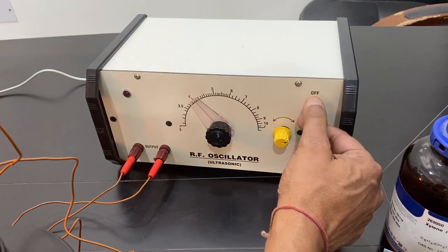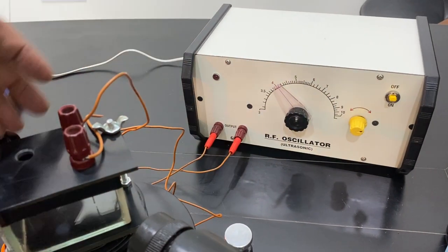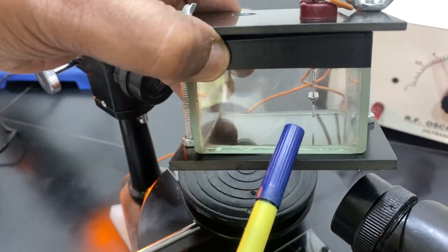You can switch it on and off, connect the two wires to the oscillator, and then output can be taken. This is a glass cell. Inside you can see the crystal is there—this crystal is connected with the terminal.